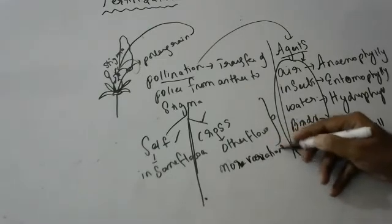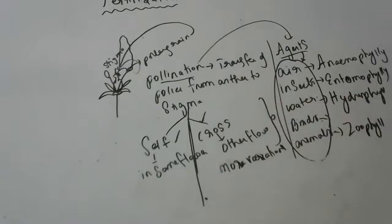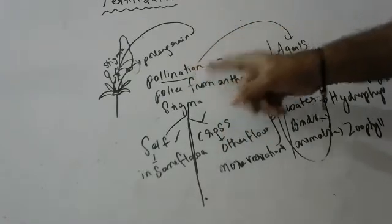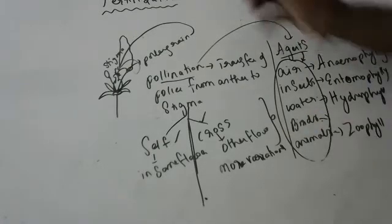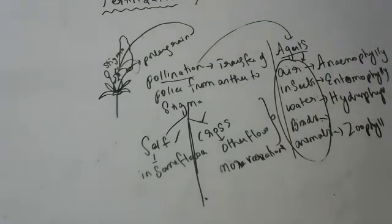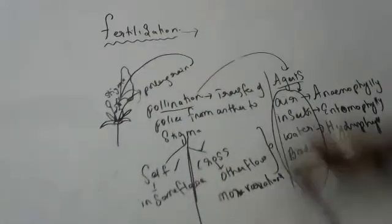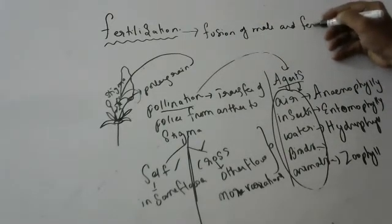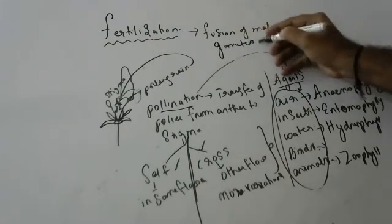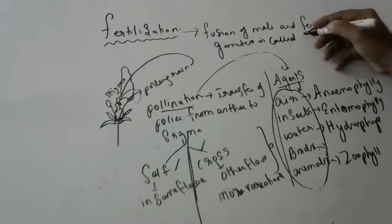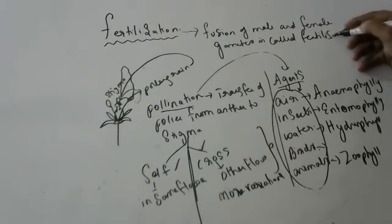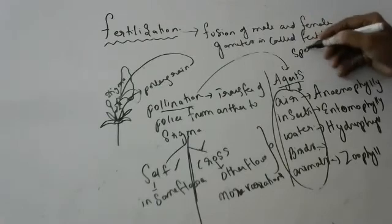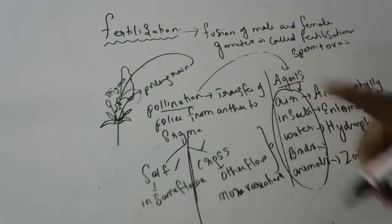Because more variations mean better chances of survival, cross-pollination is better than self-pollination. So that is pollination — transfer of pollen from anther to stigma. Now, what is fertilization? Fertilization means the fusion of male and female gametes. Fusion of male and female gametes is called fertilization. In human beings, sperm and ovum fuse — but here I am talking about plants.